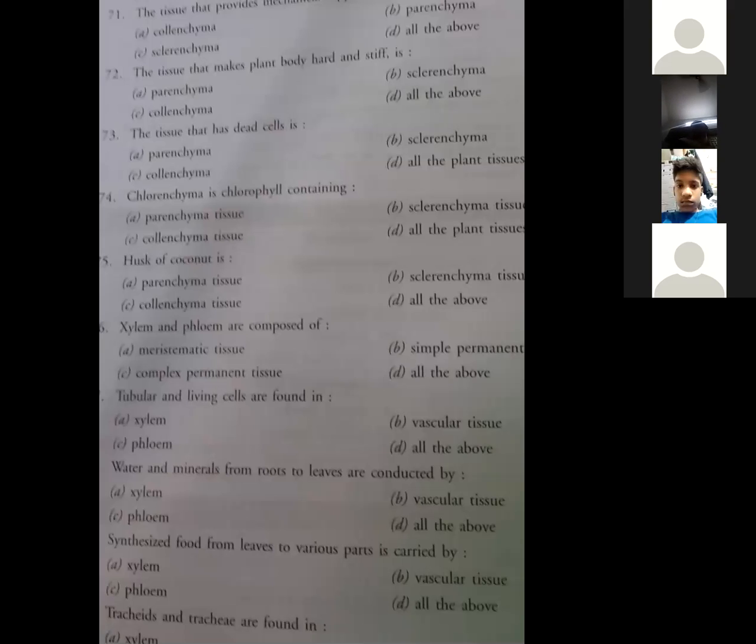Tubular and living cells are found in - tubular and living cells, you can understand. In xylem or phloem? Living cells, that is the companion cells. So that is phloem. Xylem has no companion cells, so we come to phloem. Living companion cells.